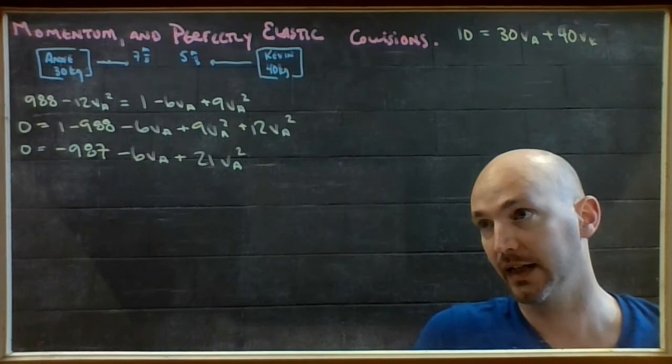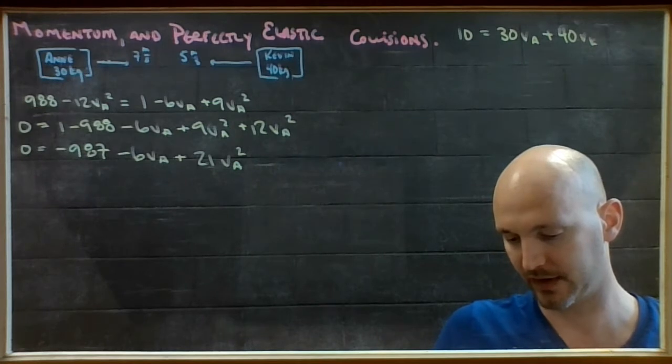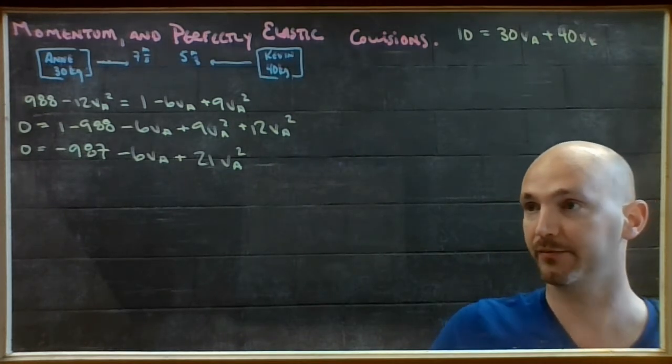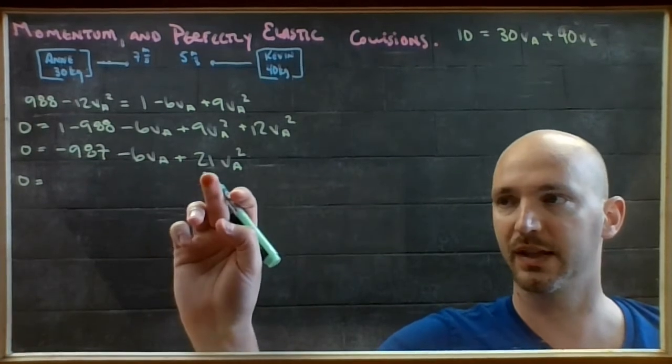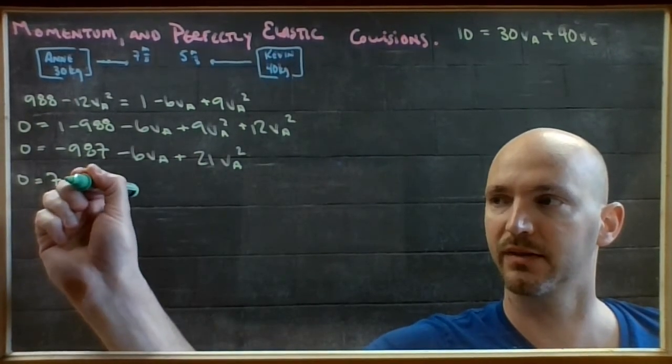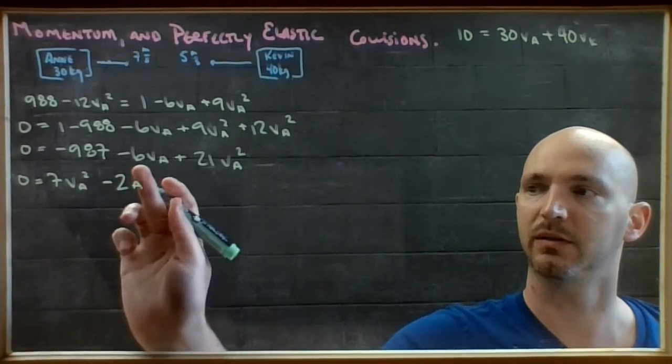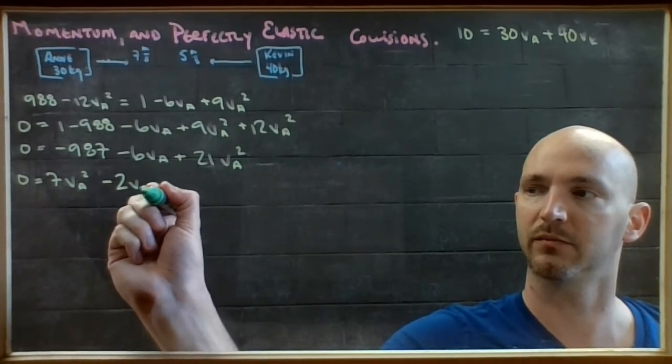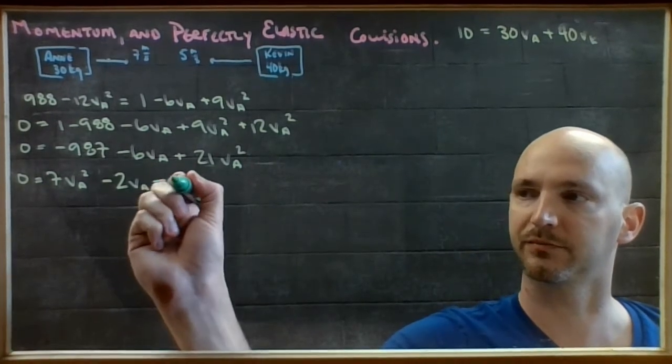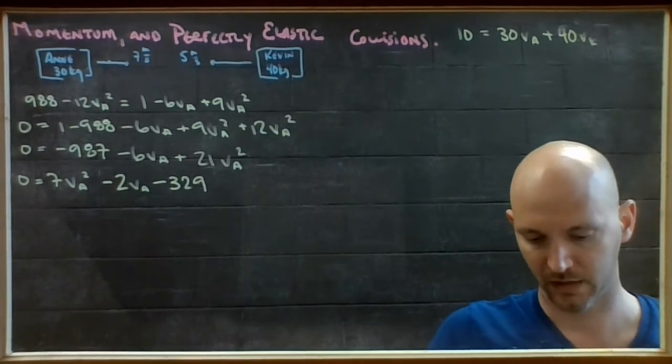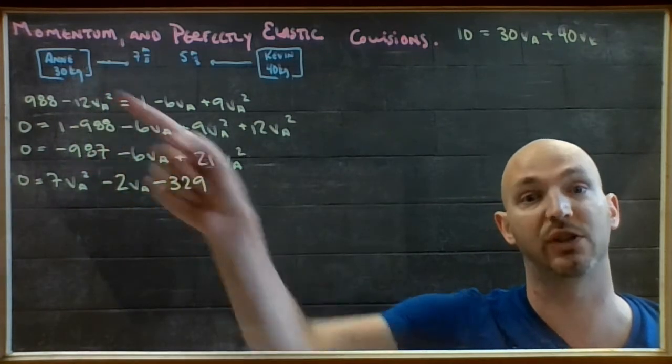If I'm lucky, 987 divides evenly by 3. So I'm going to try that. 987 divided by 3 equals 329. So I end up with, I'm going to change the order a little bit, 7va squared, this divided by 3 is negative 2va, and this divided by 3 is negative 329. So I have an equation that contains only va, that's the speed of Ann as she leaves the collision. Unfortunately, that equation has a va and a va squared in it, and the only way you can solve that is if you use quadratic formula.